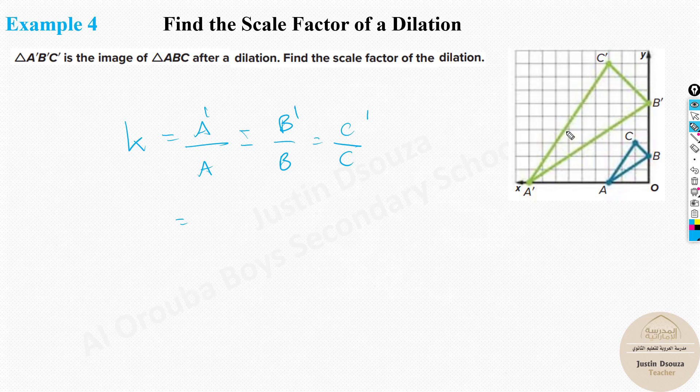I'll just choose A, any one is enough. What is A dash value? A dash is basically from here you need to come: 1, 2, 3, 4, 5, 6, 7, 8, 9, so it's minus 9. The x value is minus 9. What about the y value? Y value is 0, that is the coordinate. Now the same thing you need to find for A, that is minus 3 and 0.